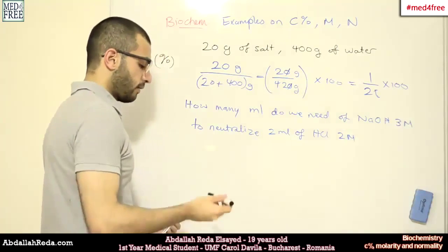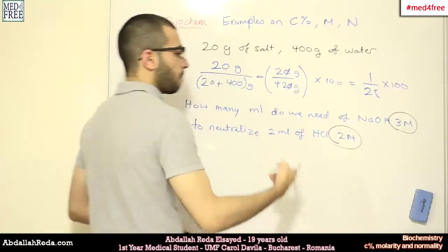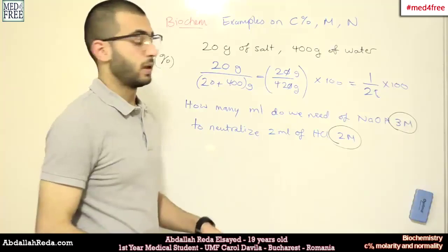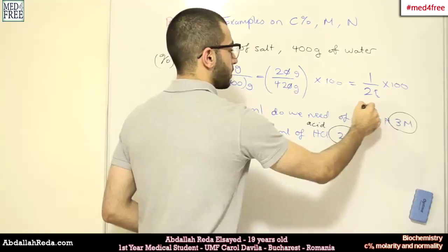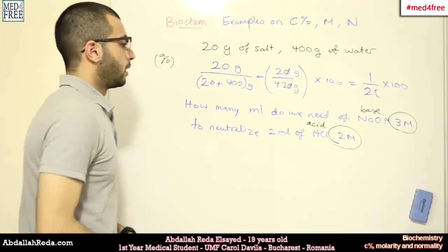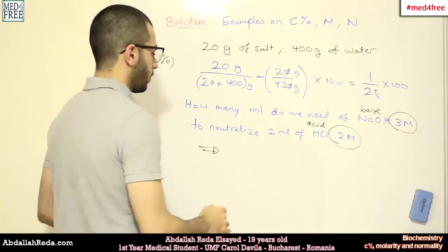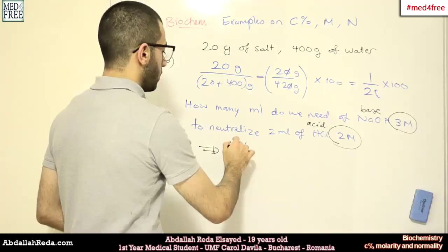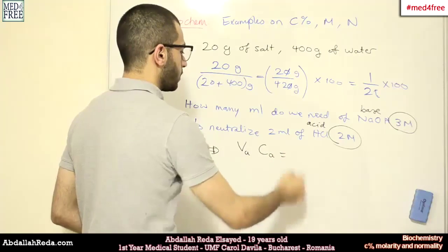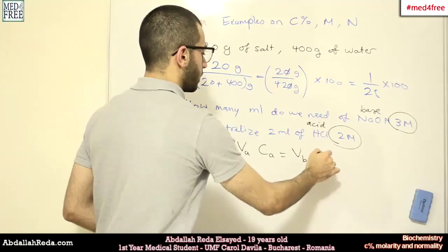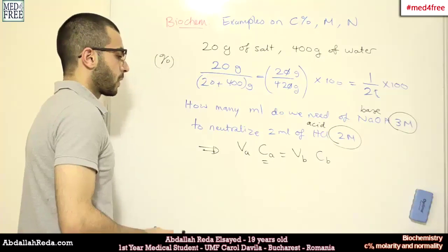In case we have the same measurement method here, which is the molarity in both the acid and the base, we can solve it very simply. What we do is we write this equation. The volume of the acid multiplied by the concentration of the acid equals the volume of the base multiplied by the concentration of the base. And by the concentration we mean the molarity or the normality.